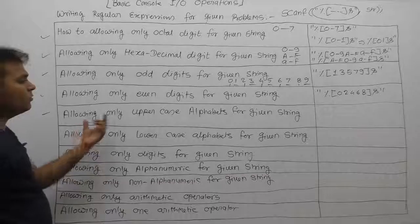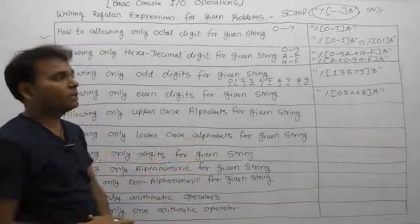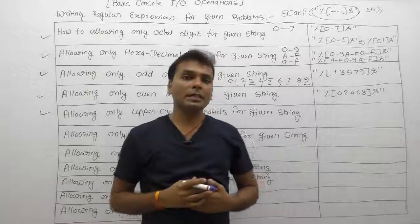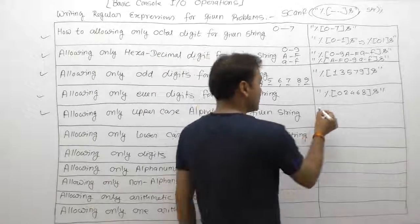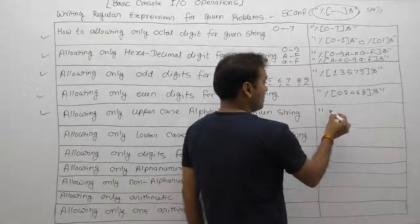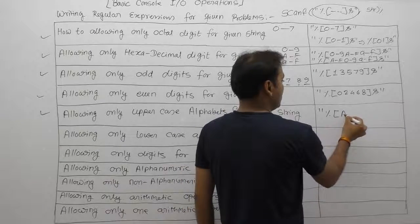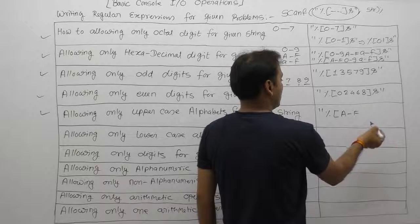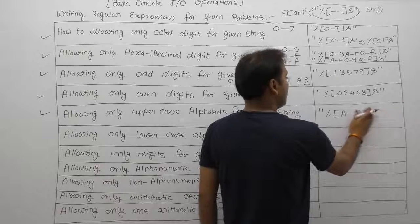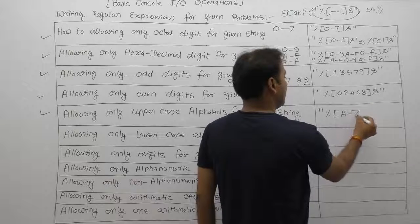Next, allowing only uppercase alphabets for a given string. Suppose you want to read only uppercase characters at runtime. The regular expression for uppercase is: percent, square bracket, A to Z (uppercase), closing square bracket, 's'.